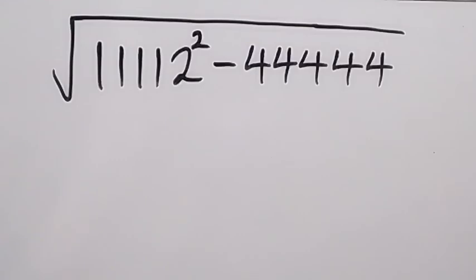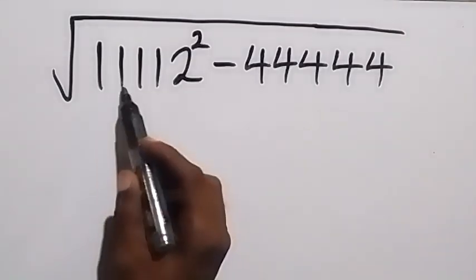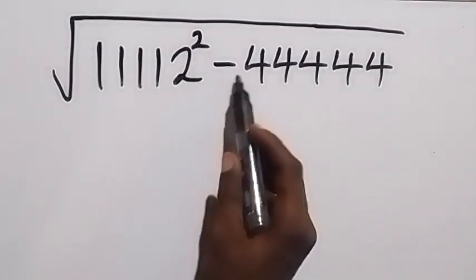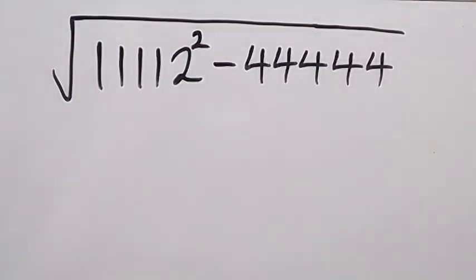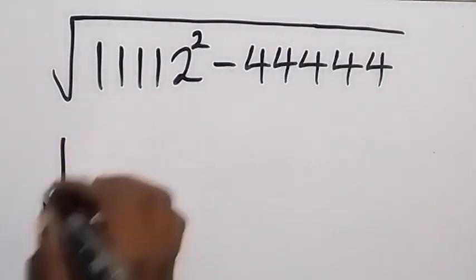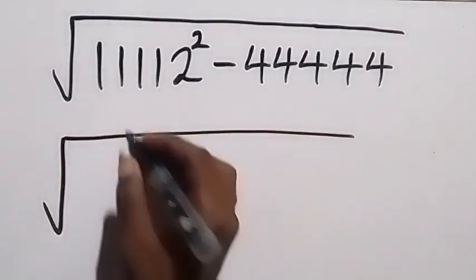Hello, you are welcome. How to solve this problem: square root of 111112 squared minus 444444 without using a calculator. Here now, from here we can express this as square root of, we can write this as 111111 plus 1. We have five of the one here now.